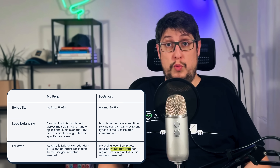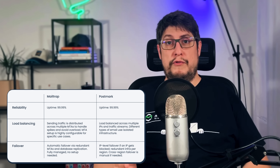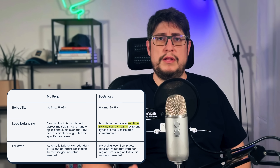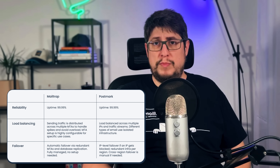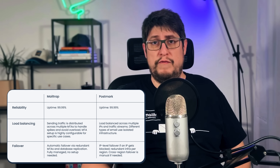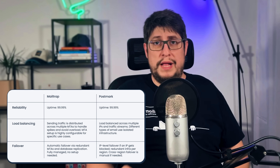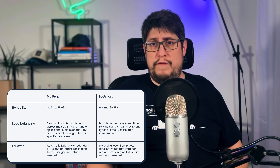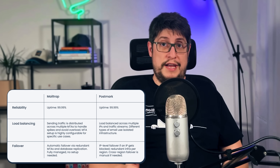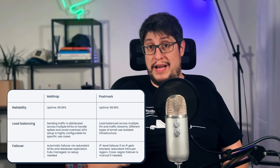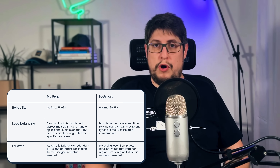Postmark runs on redundant infrastructure with automatic failover. If a server or process fails, traffic is rerouted behind the scenes to keep delivery going without interruption. Traffic is spread across multiple IP addresses to reduce risk, and if an IP gets blacklisted or a recipient domain blocks messages, Postmark shifts traffic to healthy IPs automatically. However, Postmark doesn't provide options for custom routing or isolating traffic by geography, compliance level, or other specific needs — all failover and traffic management happen internally without user control. Unlike Postmark's set-it-and-forget-it failover, MailTrap gives you the same rock-solid reliability plus the flexibility to customize routing and load balancing for complex setups or strict compliance.